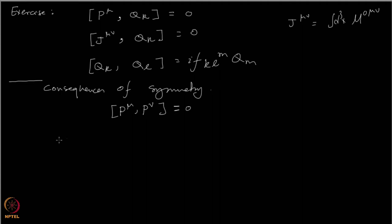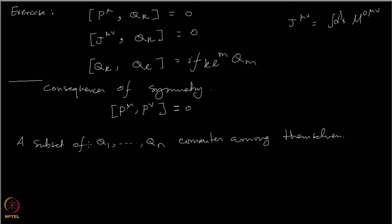Not all Q's commute, but some of them may. If you take a subset of whatever charges you have in your theory corresponding to that symmetry — a subset which commutes among themselves — let us call them D_i.